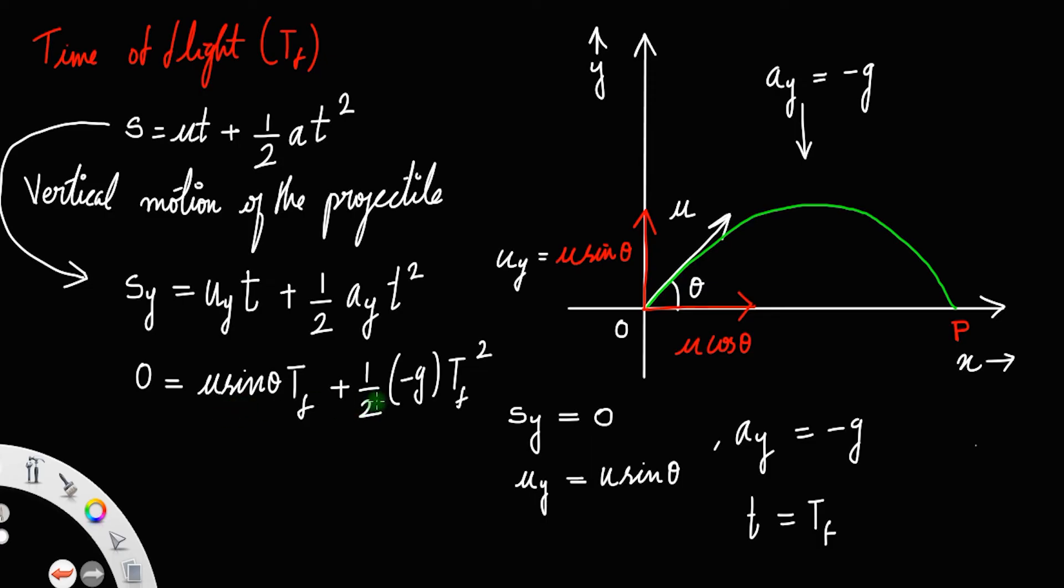Simplifying, you can take this u sin theta to the left. Minus u sin theta times t_f equals minus half g times t_f squared.